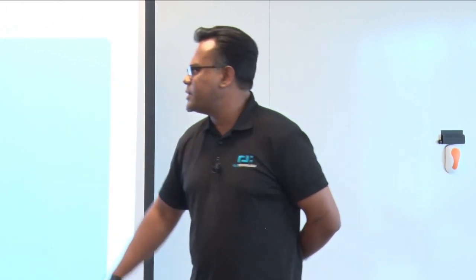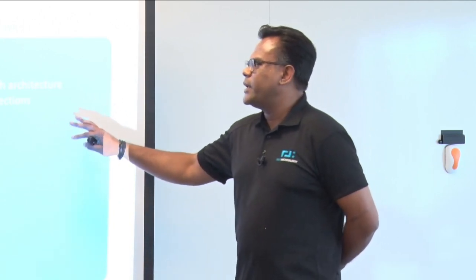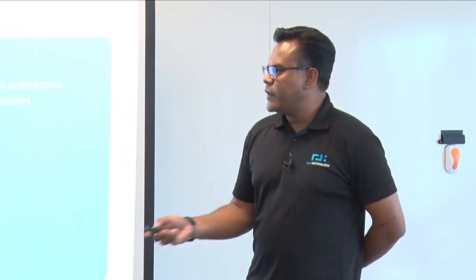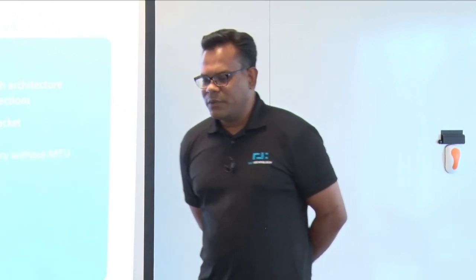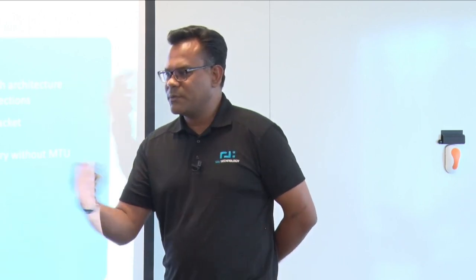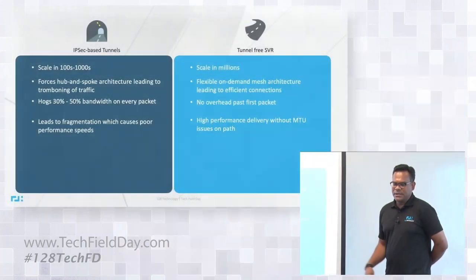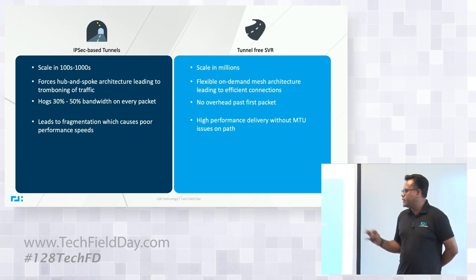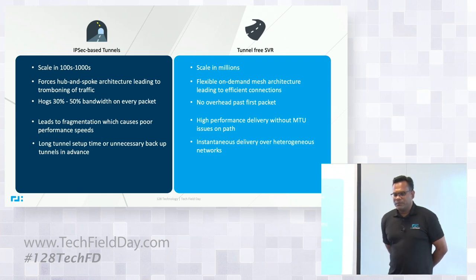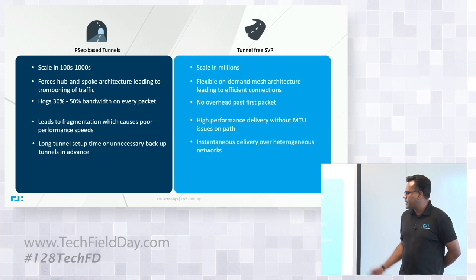In general: IPsec scale is lower — scale is in hundreds of thousands; in our case, scale is in millions of sessions. With IPsec you're forced into hub-and-spoke designs; with tunnel-free SVR routing, you have on-demand creation of architecture. Tunnels have 30–50% overhead in traffic; we have zero overhead except for the first packet. Tunnels cause fragmentation leading to poor performance; in our case, first-packet fragmentation is possible, but compared to IPsec we are not adding overhead. Tunnels require long setup times or backup tunnels; with SVR, failovers are faster. Tunnels bypass security; hypersegmentation masquerades the network completely and provides security.